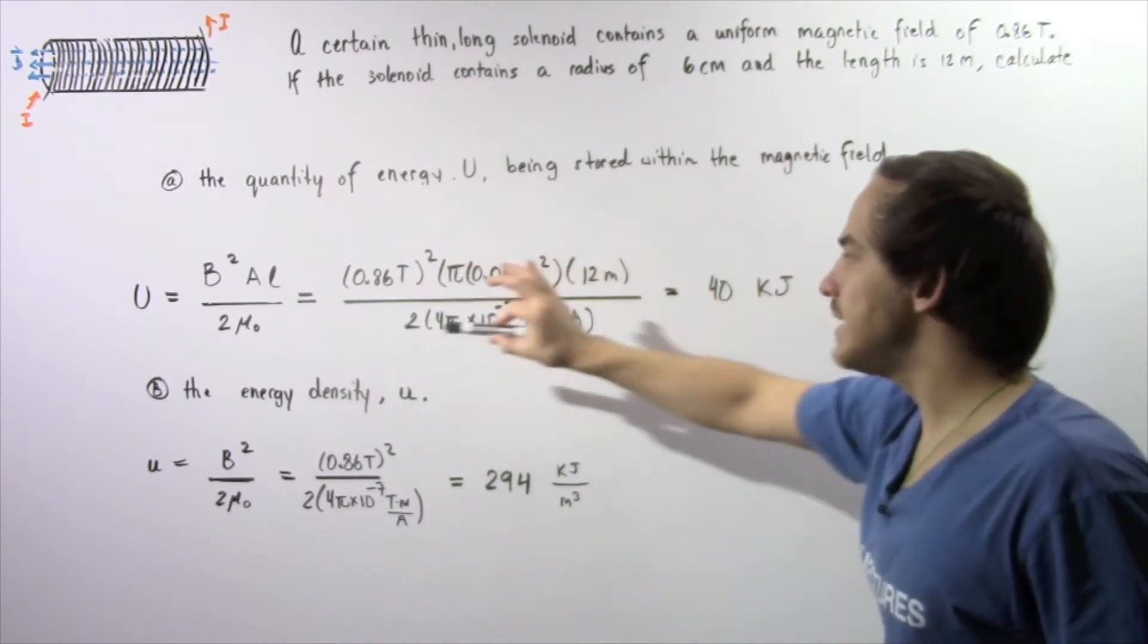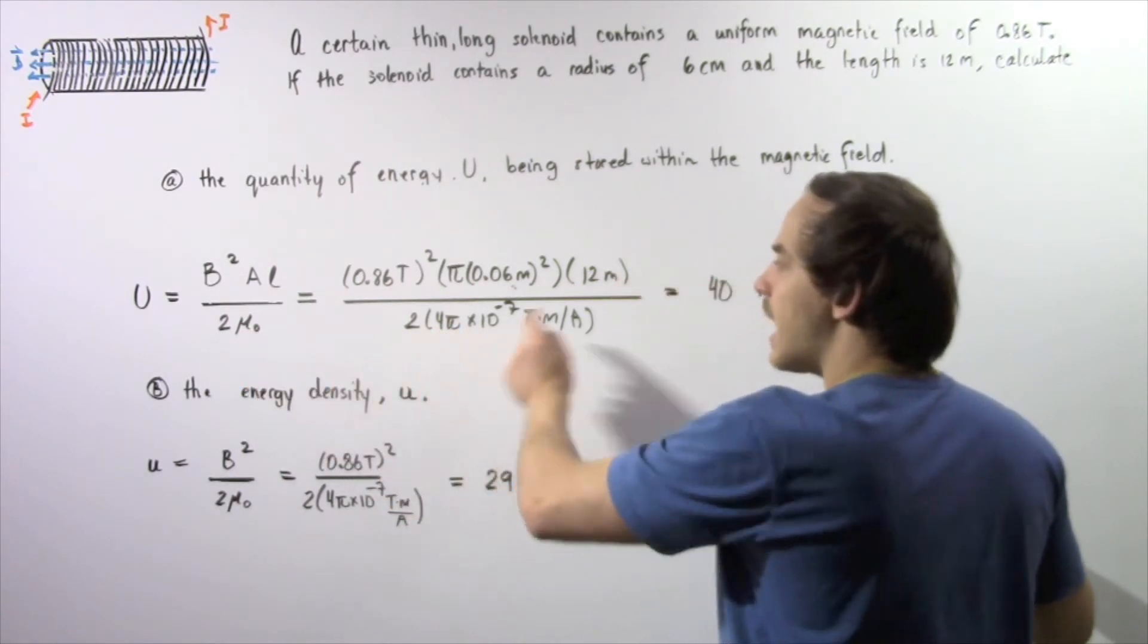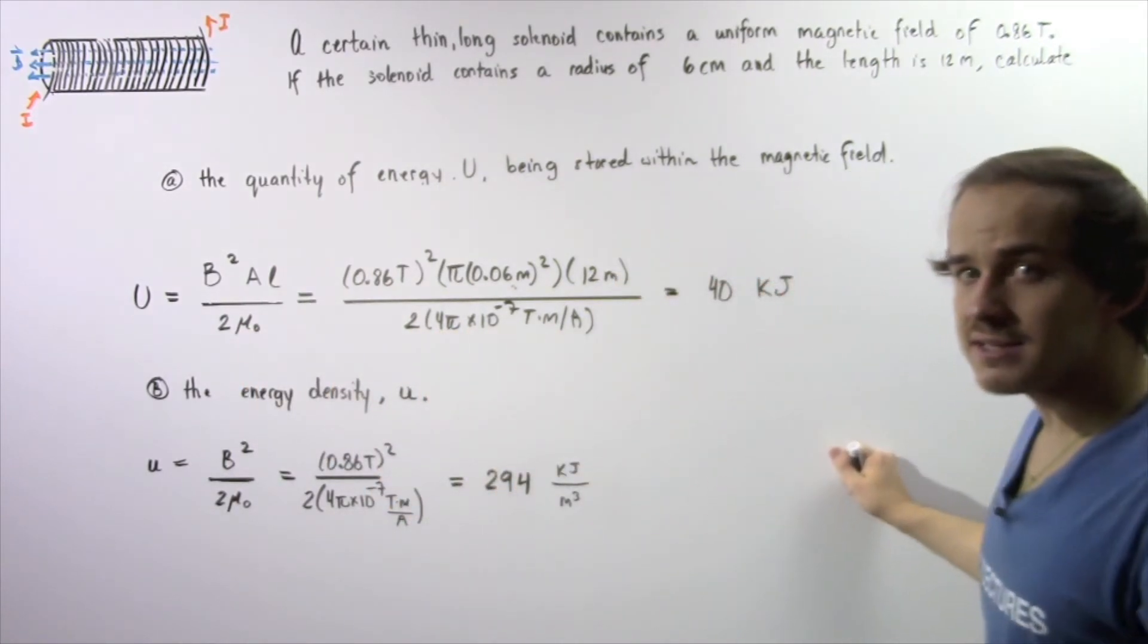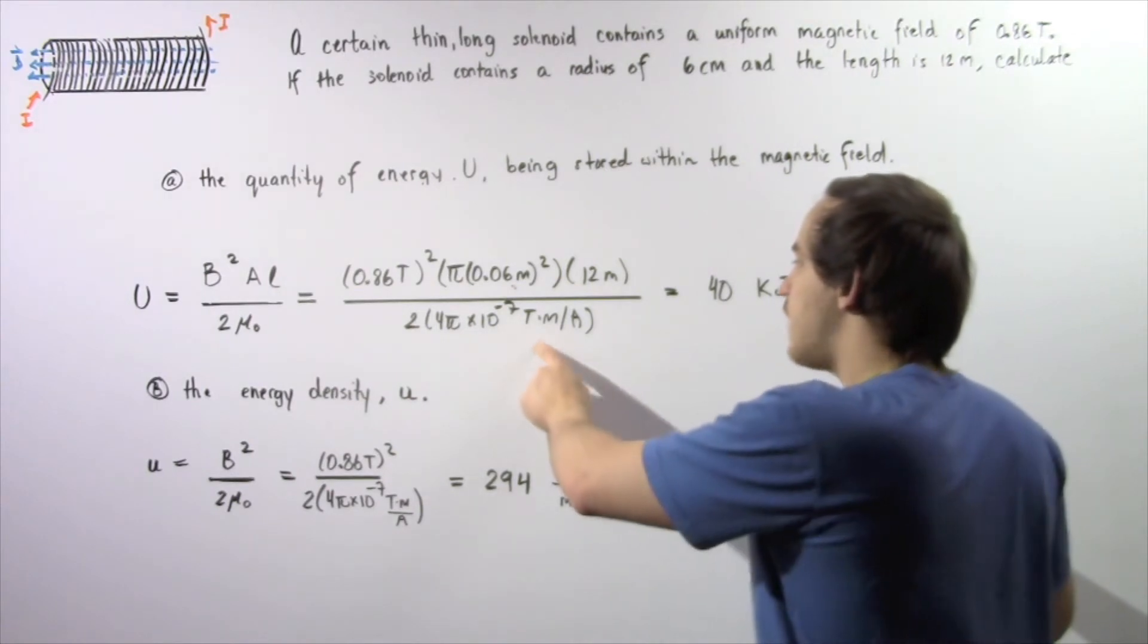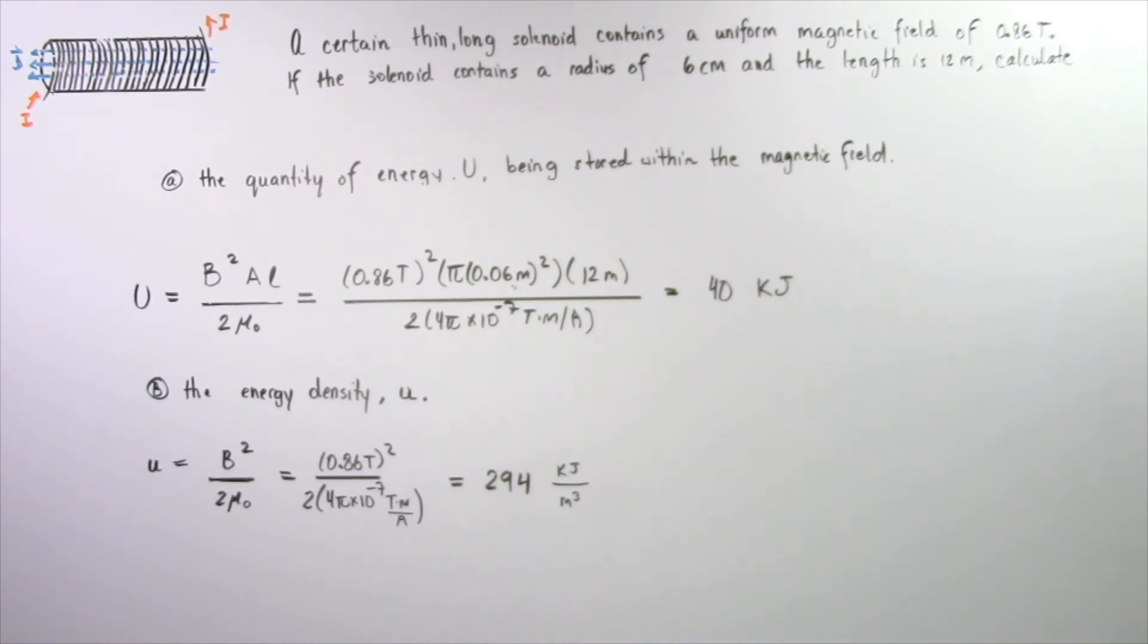And we divide this by 2 multiplied by the permeability of free space, 4 pi times 10 to the negative 7 teslas multiplied by meters divided by amps. And that gives us about 40 kilojoules of energy.